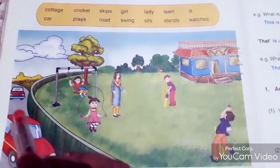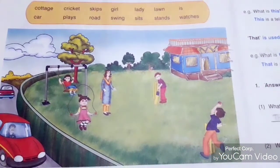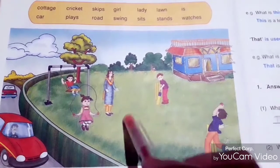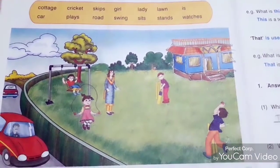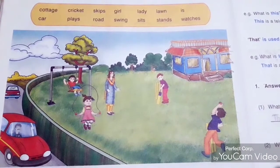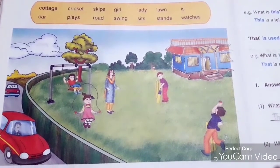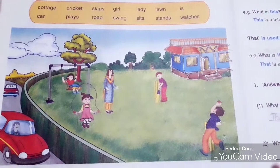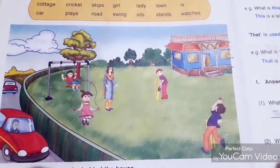Behind the house, behind the field, so many trees are there. And on the road, cars are running. This is the picture explanation.